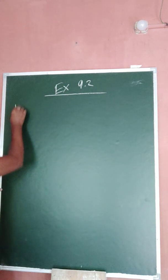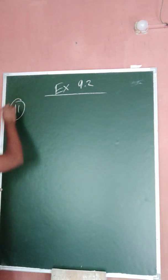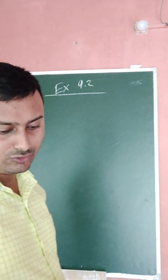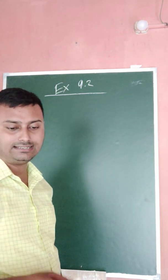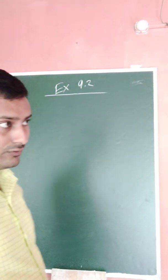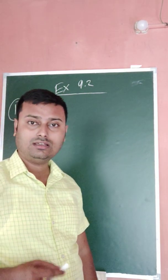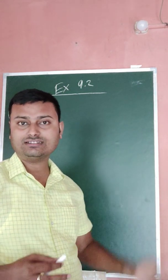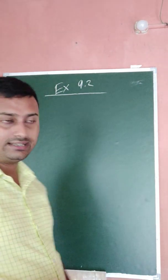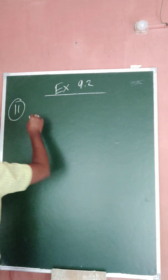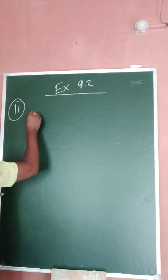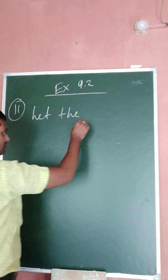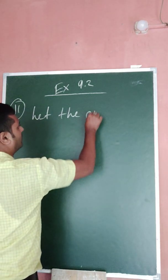So it is given that the perimeter is 120, and one side is 10 centimeters longer than the other side. Therefore, if you take the smaller side as x centimeters, then the longer side is x plus 10 centimeters.